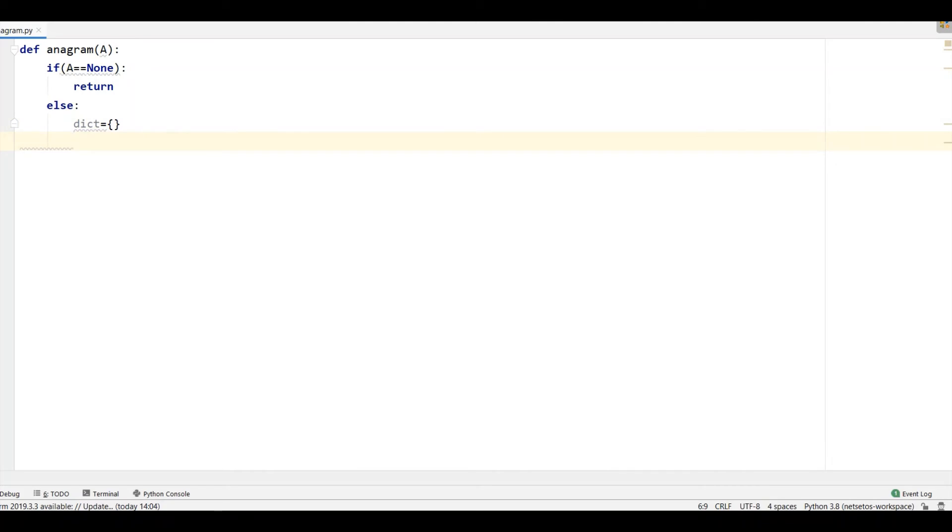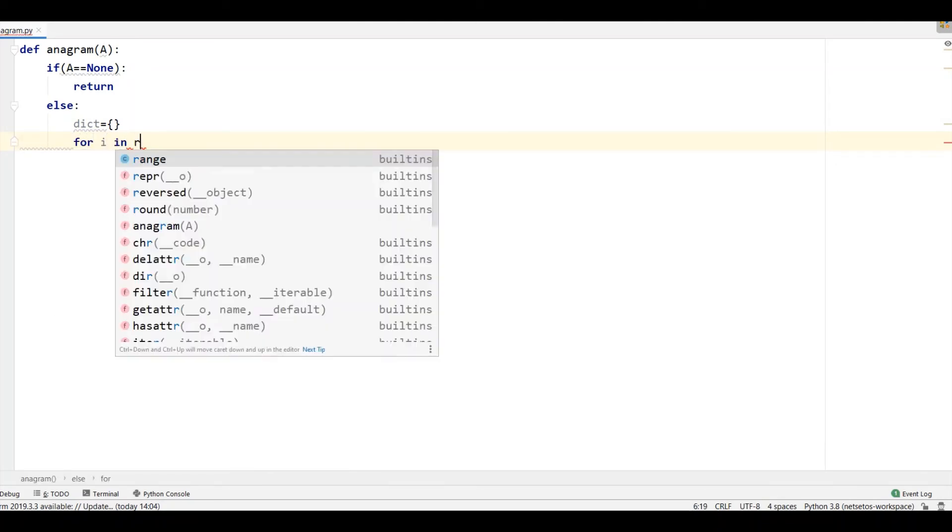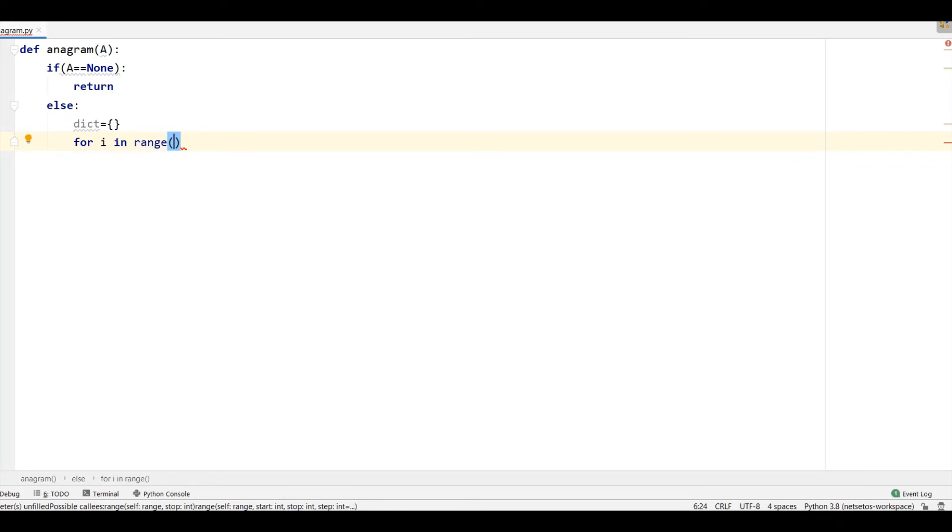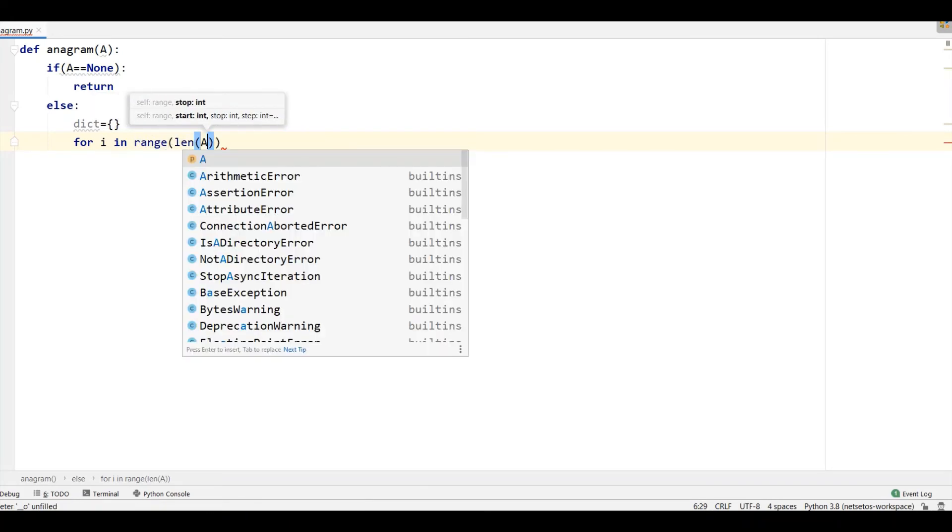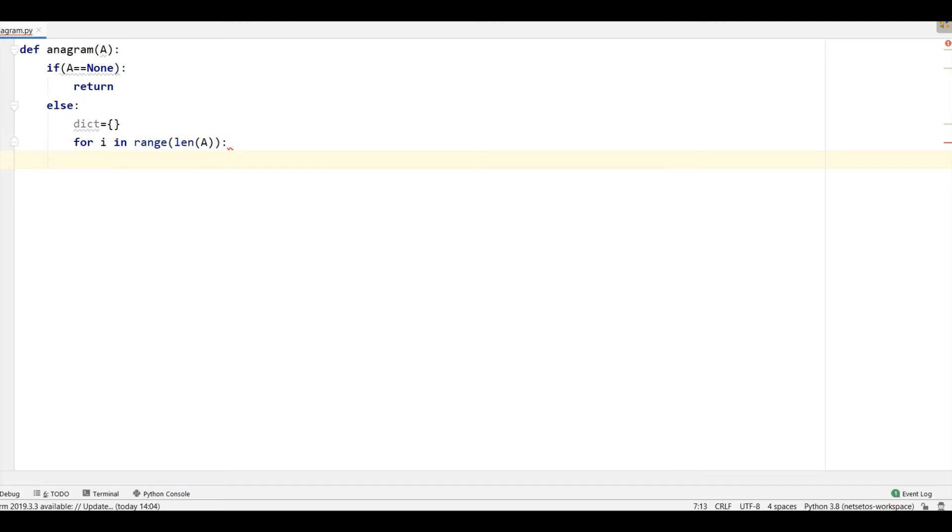Then, we need to iterate. So, I will write for i in range from 0 to len of a. Then, we will sort the word which we are getting. First, I will write sorted and here I want a i ith element of a array as I want in string.